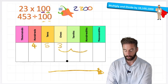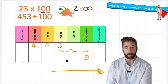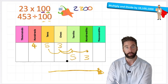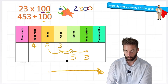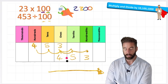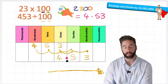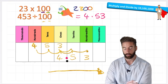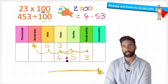I move my 5 one, two into the tenths column, and I move my 4 one, two, landing in the ones column. Don't forget to put that decimal — that's super important. 453 divided by 100 leaves me with 4.53, or 4 and 53 one-hundredths.